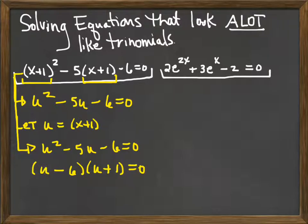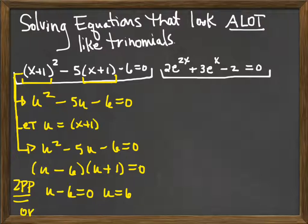You should always go back and do a quick check by re-multiplying your factors to see if you factored correctly and then I'm going to apply the zero product property and set each factor to zero. So u minus 6 equals zero means u equals 6 or u plus 1 equals zero which means u equals negative 1.